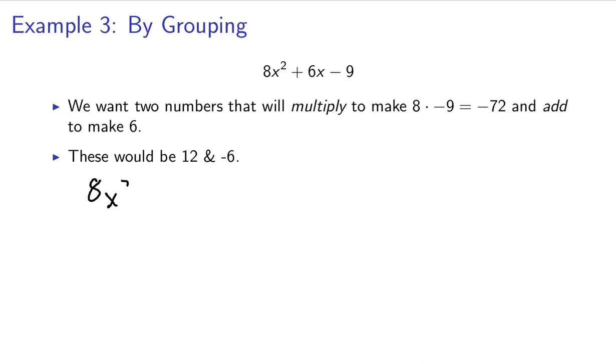So, now that we have that, we have 8x squared plus 6x minus 9. I'm going to take this term and separate it into this 12 and negative 6.